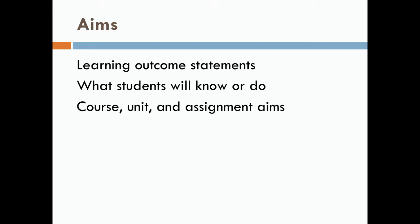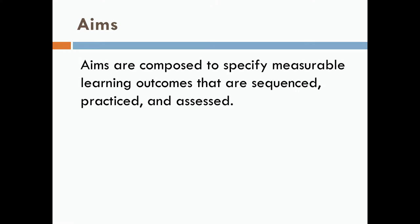AIMS are written at course level, unit level, and assignment level. Most importantly, they're written for a student audience. They state the level of performance that we expect students to attain and they acknowledge how we will measure their performance.